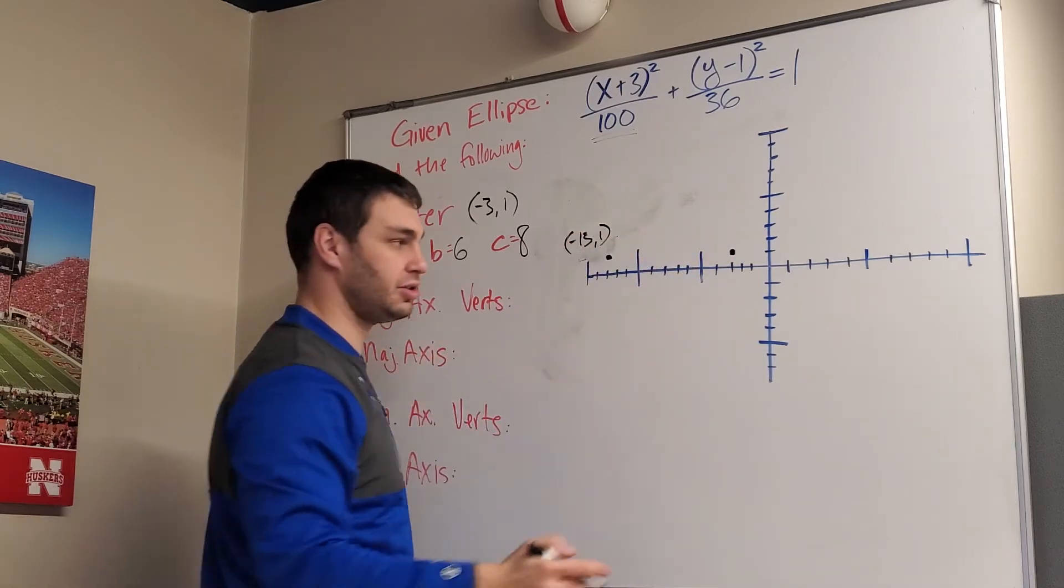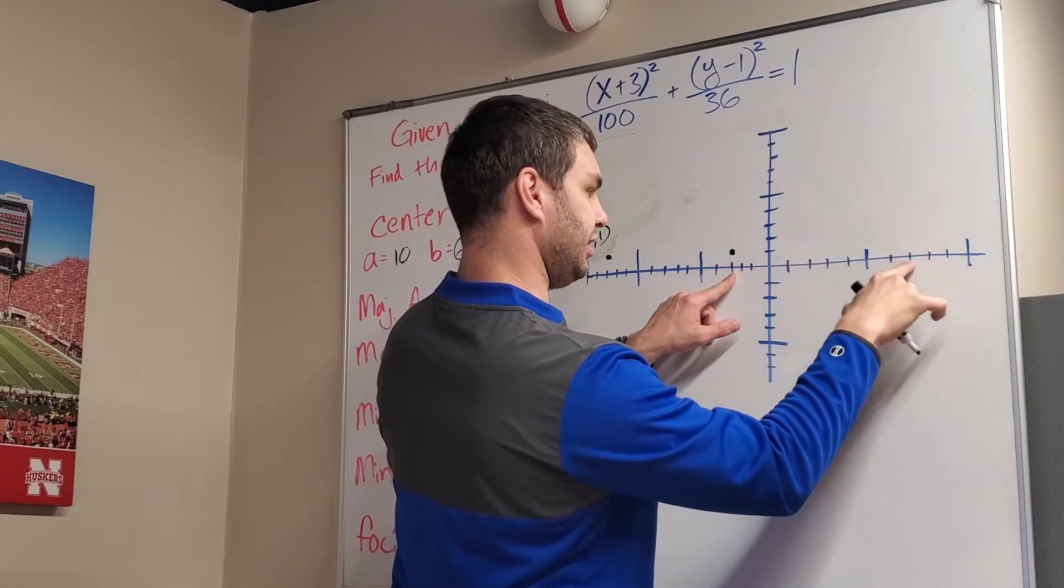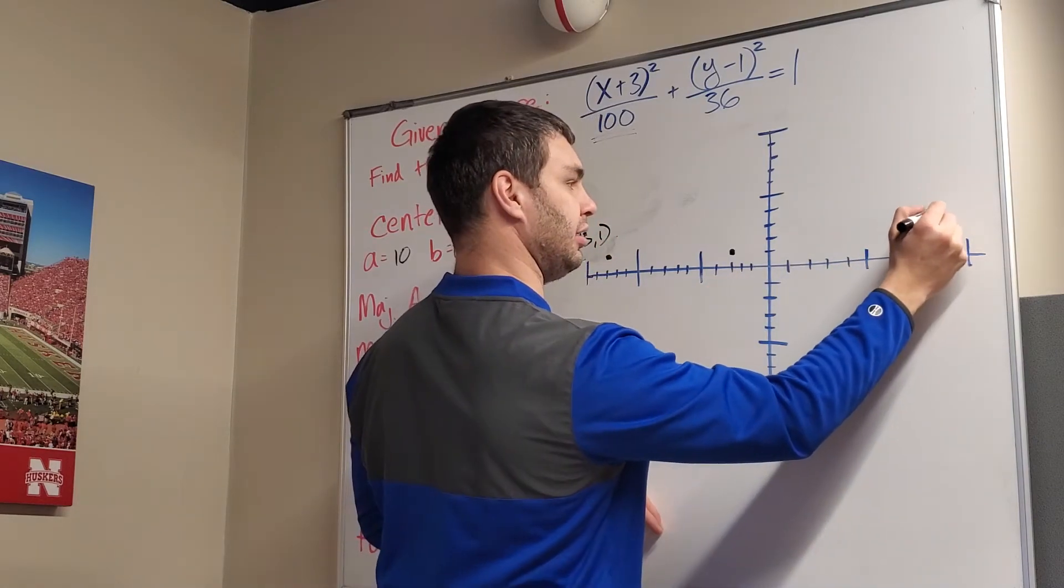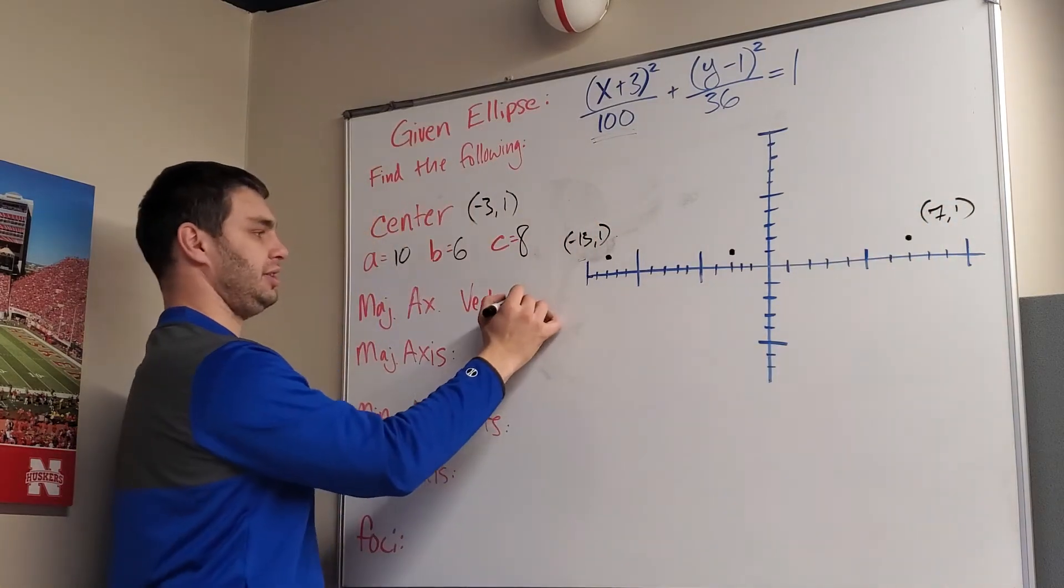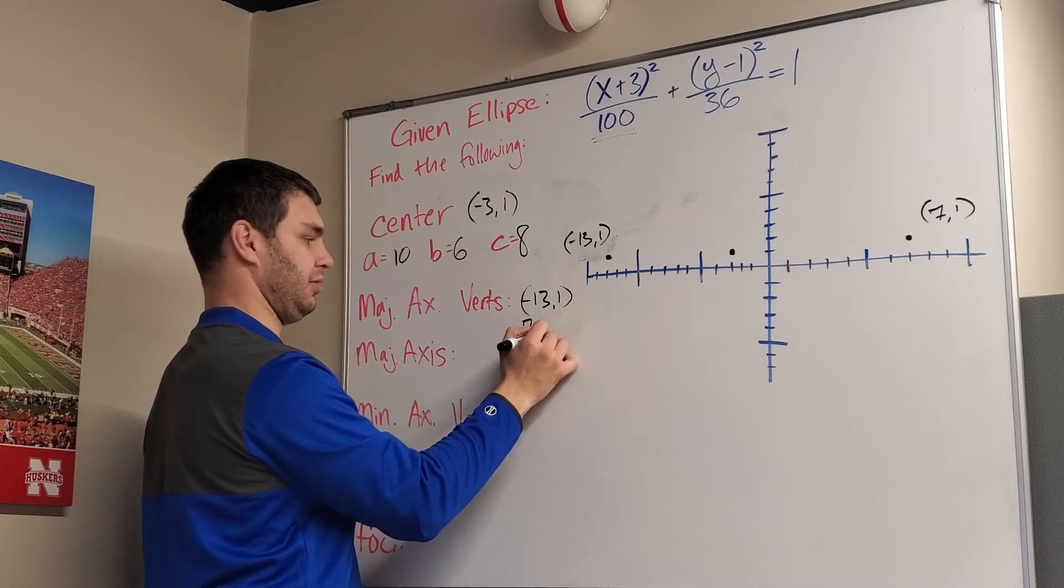Okay, and if I go 10 spots in the other direction, let's see. We have 5 and 10, this would be at the point (7, 1). So my major axis vertices are (-13, 1) and (7, 1).